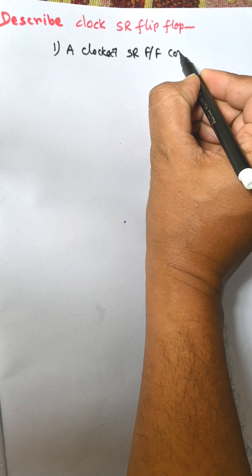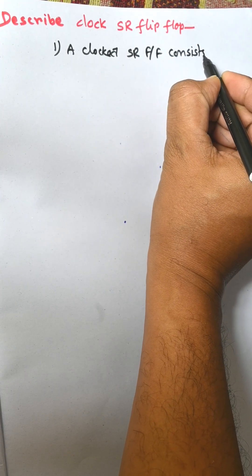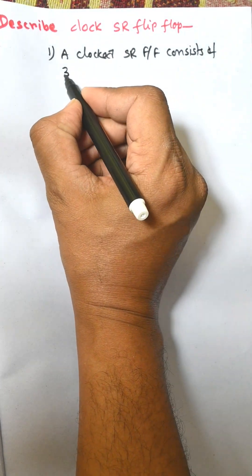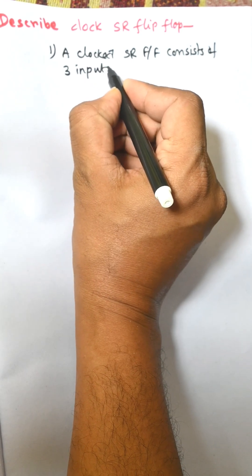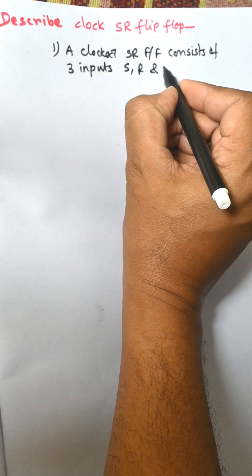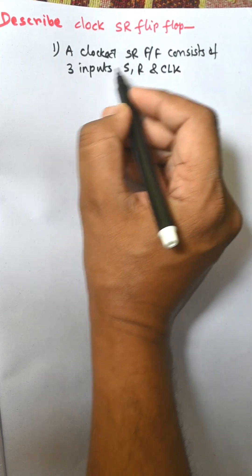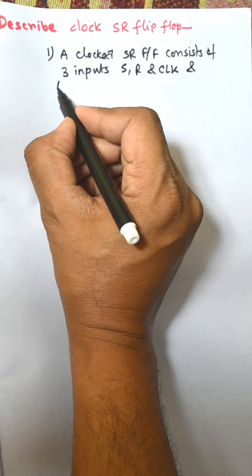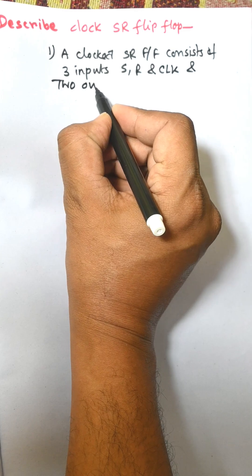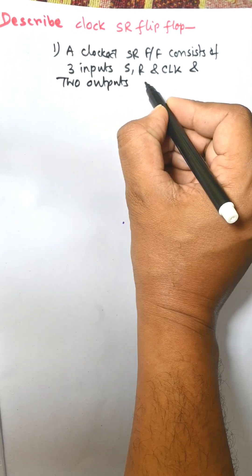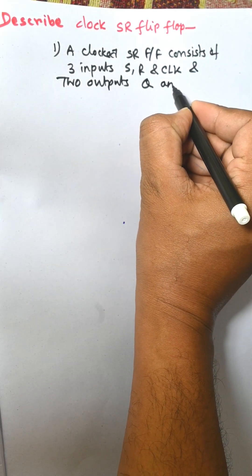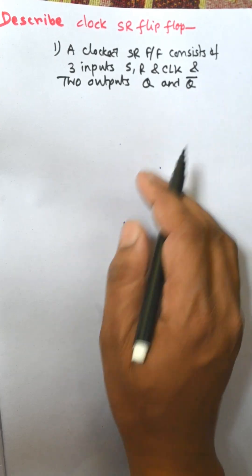A clocked SR flip-flop consists of three inputs: S, R, and CLK, and two outputs Q and Q-bar. Every flip-flop consists of two outputs, one is Q and another is Q-bar.